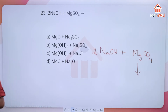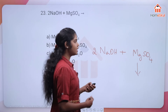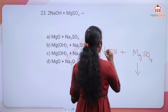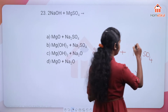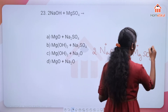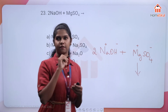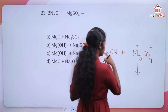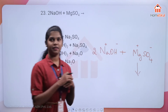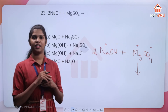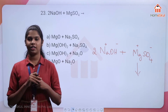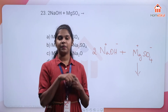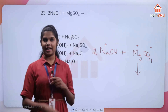Let us assign charges: sodium is positive, OH is negative, Mg is positive, and SO4 is negative. In a double displacement reaction, the positive ion of one reactant combines with the negative ion of the other.